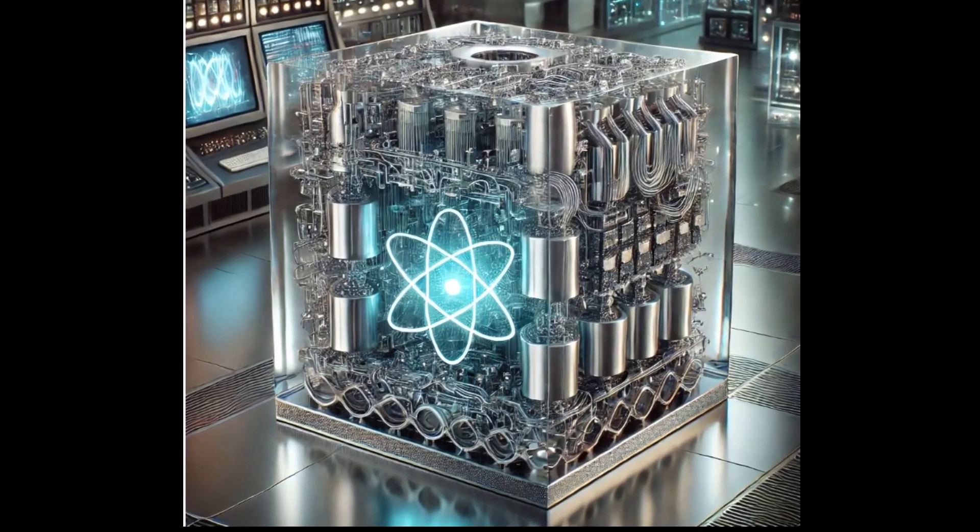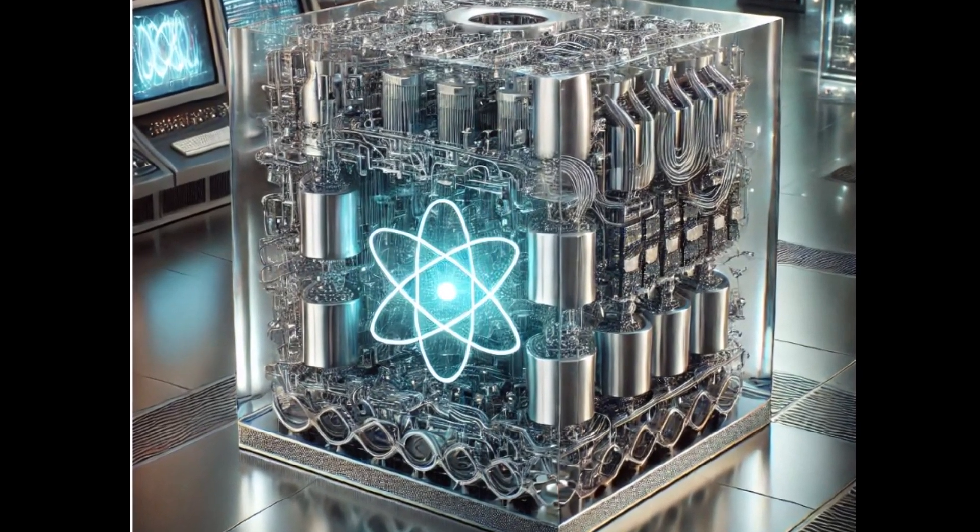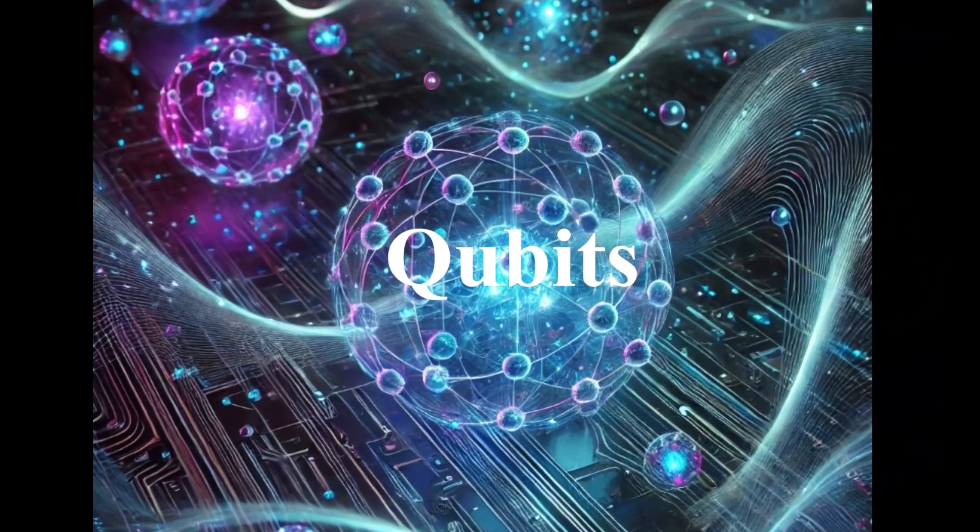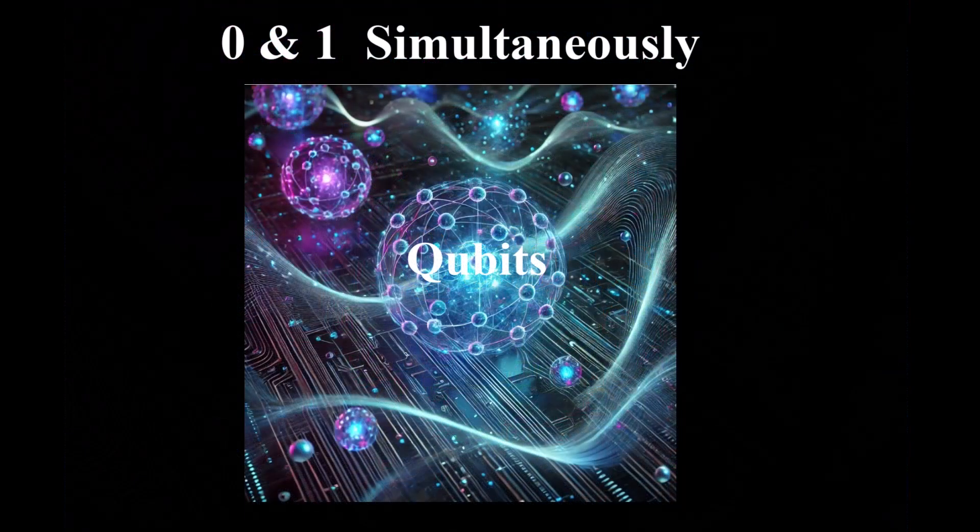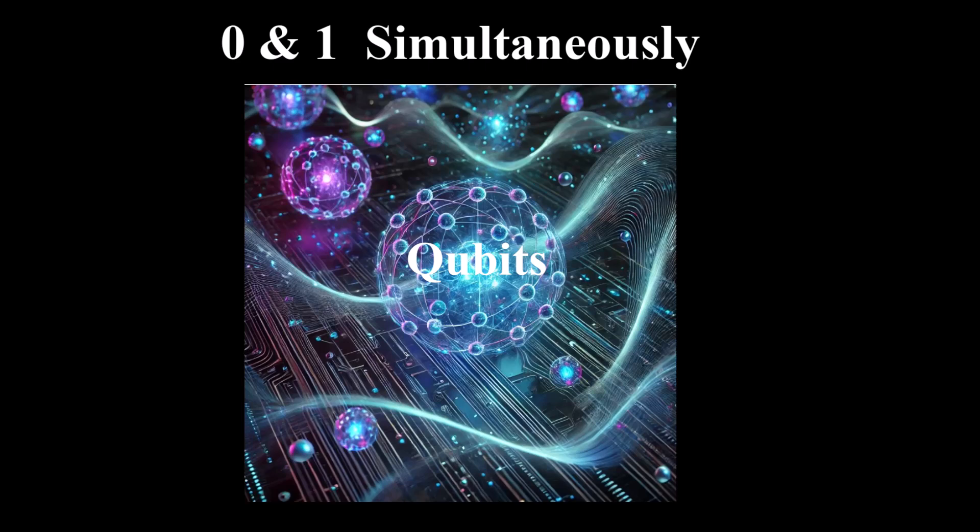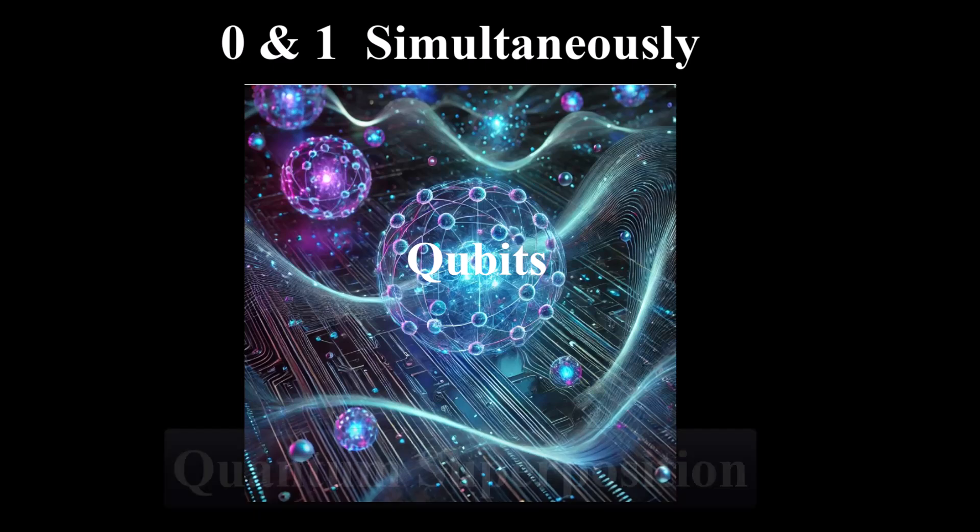Now, imagine a new kind of computer, one that doesn't just use zeros and ones. Instead, it uses something called qubits. Here's the cool part: a qubit can be both zero and one at the same time. This is thanks to a mind-bending principle in physics called superposition.